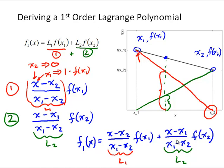This might seem like an overly complicated way to calculate the equation of a line, and it is — but it's important to understand the first order case in order to derive higher order Lagrange polynomials. Recall from the previous video that calculating a second, third, or fourth order interpolating polynomial required solving a linear system, giving a Vandermonde matrix that was ill-conditioned and vulnerable to round-off error. This approach gives us a way to solve for those polynomials without that linear system.